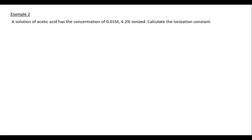Example number two: A solution of acetic acid has a concentration of 0.01 molar, and 4.2 percent of it ionized in aqueous solution. We have to calculate the ionization constant, or Ka.